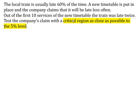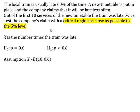In previous videos, the actual significance level — the probability of falling in the critical region — always had to be less than the significance level. But in this question, rather than being less than, it just has to be as close as possible. So it could actually be just above 5%.